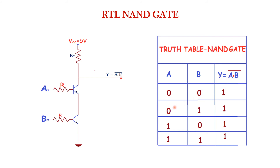Note that the last entry in the truth table was mistakenly written — 1 into 1 equals 1, and 1 bar equals 0. This is the RTL NAND gate circuit.